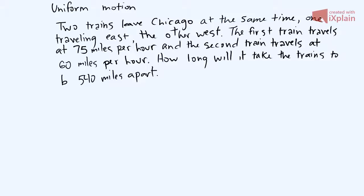Okay, we're going to take a look at a uniform motion problem. Here it says, two trains leave Chicago at the same time, one traveling east, the other west. The first train travels at 75 miles per hour, and the second train travels at 60 miles per hour. How long will it take the trains to be 540 miles apart?